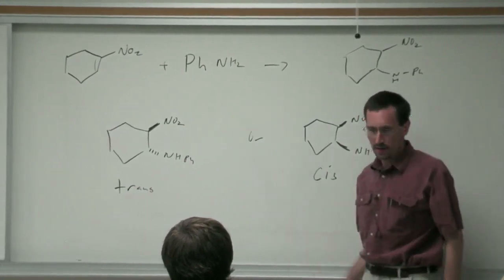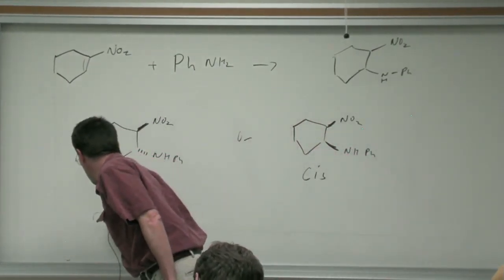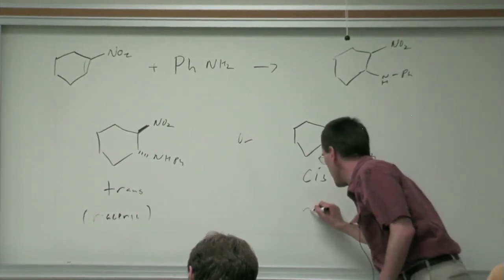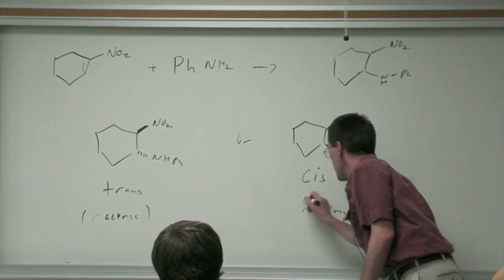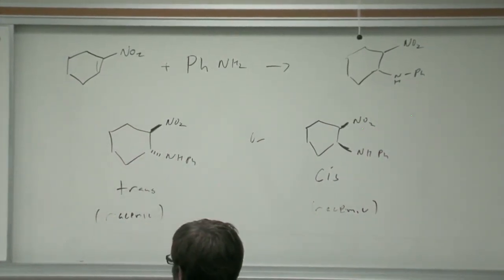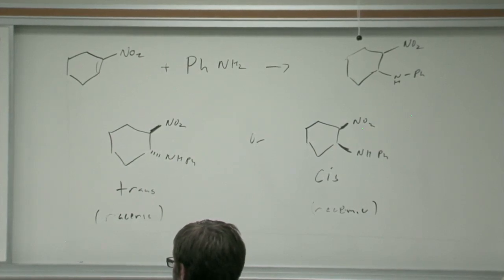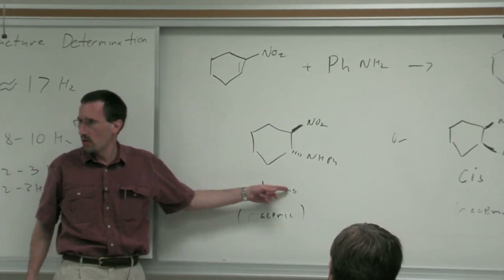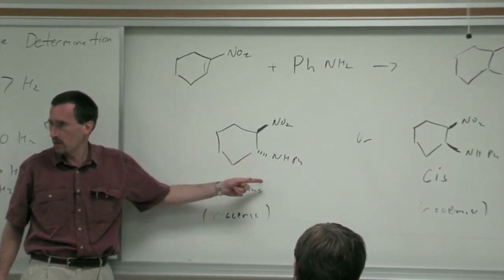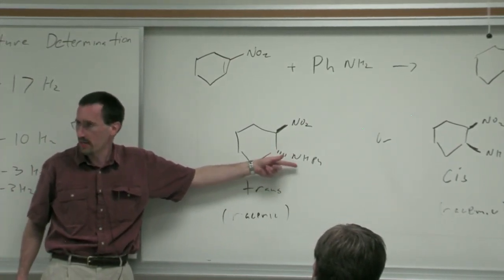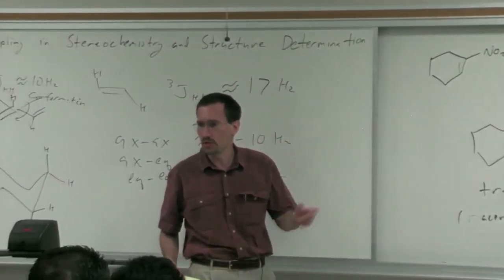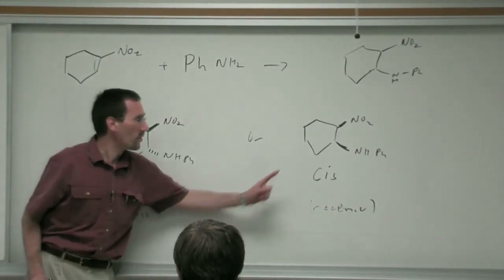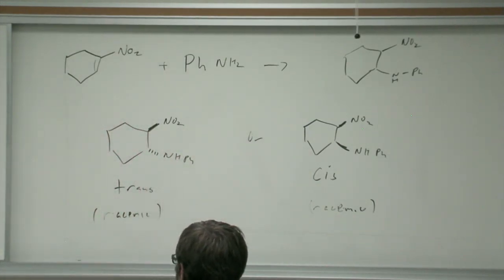These two diastereomers are each formed as the racemate, and that doesn't matter because you can't tell one enantiomer from another by NMR. The spectrum of a racemic mixture is identical to the spectrum of either individual enantiomer unless you have a chiral solvent or prepare a chiral derivative. The only way to distinguish the two enantiomers apart would be to make an enamide with a chiral acid, or use a chiral shift reagent or chiral solvating agent. The big question is which diastereomer—cis or trans—is formed.